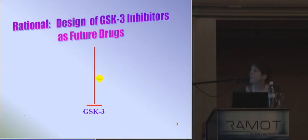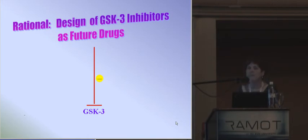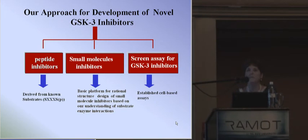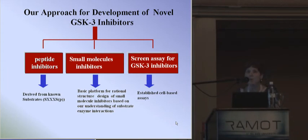Our rationale is that inhibition of GSK3 will have therapeutic value in treating these diseases, and therefore our strategy is to design specific GSK3 inhibitors as future drugs. Our approach is divided into three directions: we develop peptide inhibitors for GSK3; based on that knowledge, we also develop small molecule inhibitors; and finally, we develop a novel screen assay to identify specific substrate-competitive inhibitors of the enzyme.